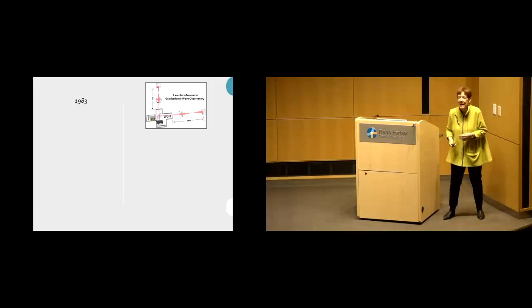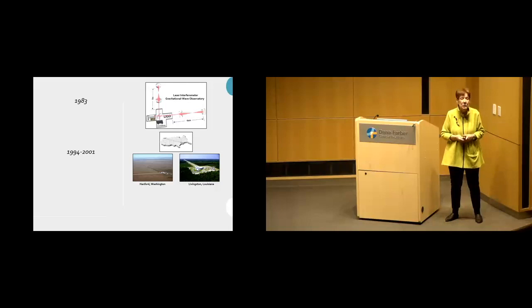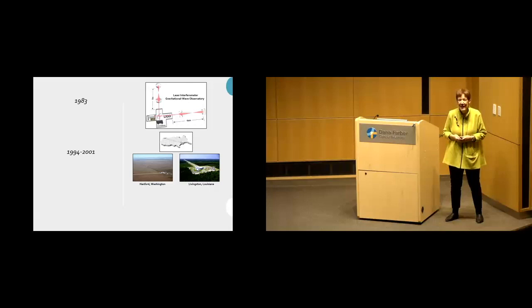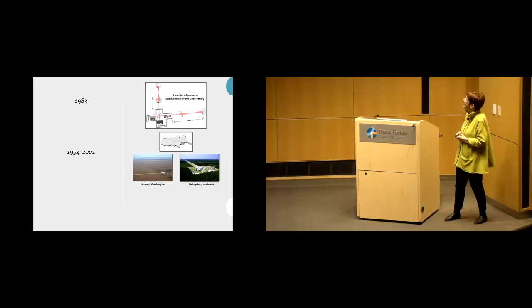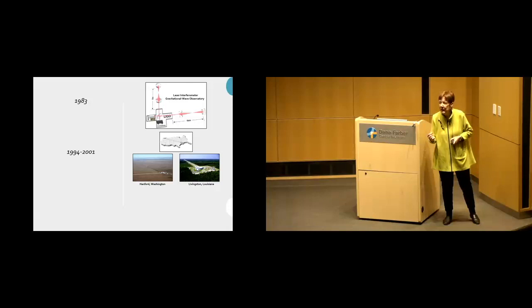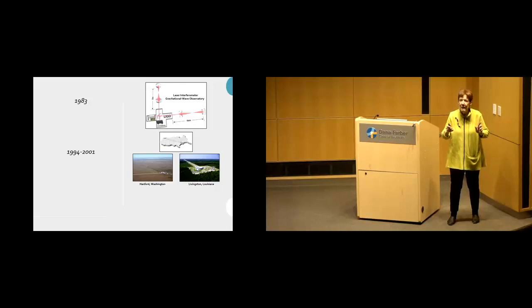So in 1994, they started construction. And it took quite a number of years to fully build. They're quite big instruments. One in Hanford, Washington. And surprise, surprise, one in Livingston, Louisiana. So that Louisiana senator got his cut. You want two observatories because these instruments are so sensitive. They are the most sensitive measuring devices in the world. A truck passing by could set them off. What you want is two set very far apart so that you can really be assured that both see the same signal.